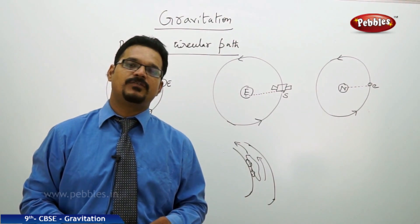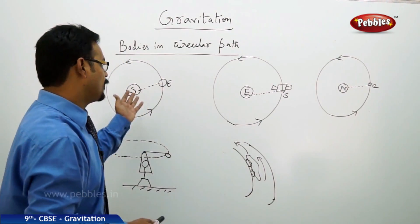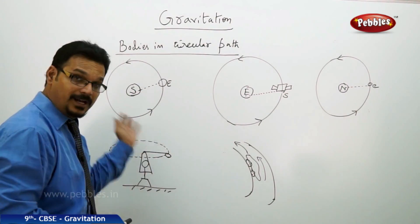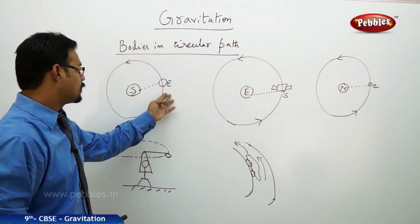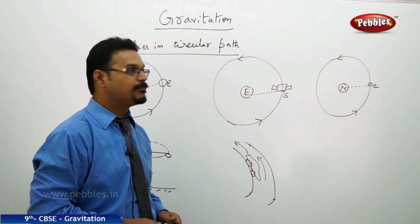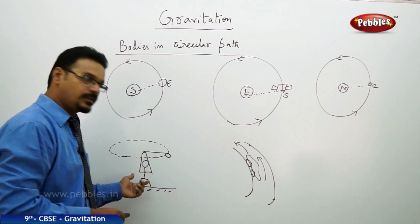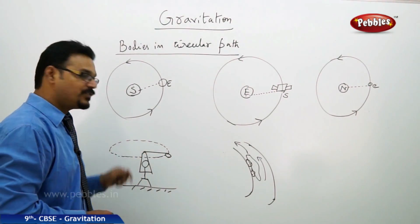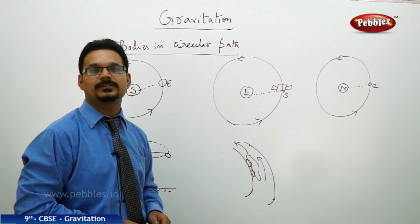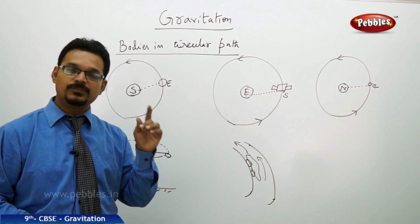Before discussing gravitation, we should know how objects move in a circular path. On the board you can see different diagrams — in all these diagrams only one thing is common, and that is circular path. Earth rotating around the Sun in a circular path, a satellite rotating around the Earth in a circular path, an electron rotating around the nucleus, a person whirling a stone tied to a string, and a car taking a circular turn.